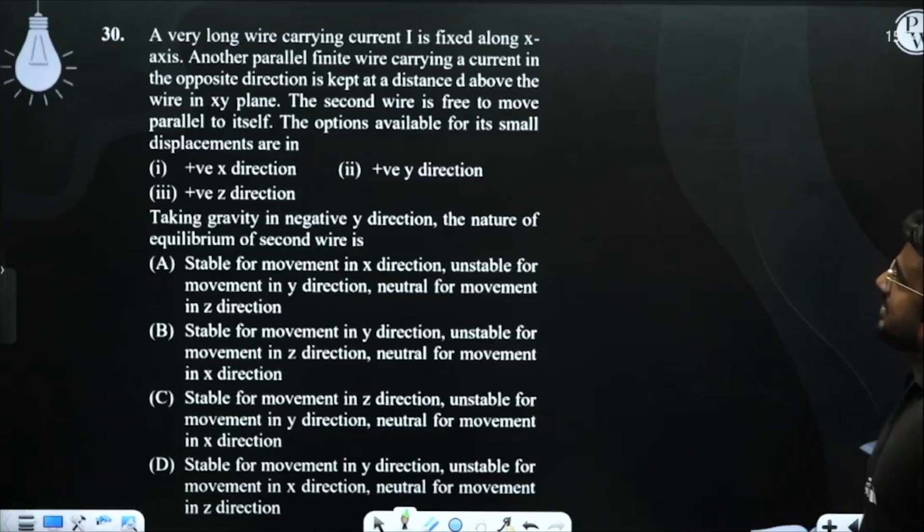A very long wire carrying current I is fixed along the x-axis. Another parallel finite wire carries current in the opposite direction. It is kept at a distance d above the wire in the xy plane. The second wire is free to move parallel to itself. The options available for its displacement are...